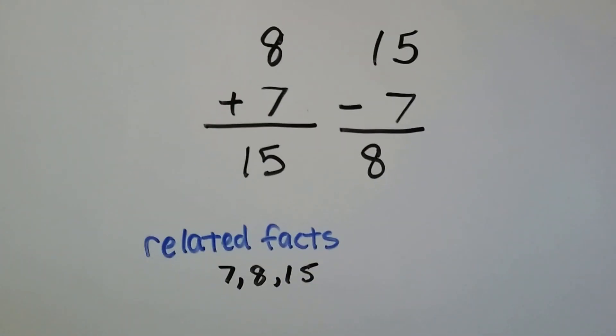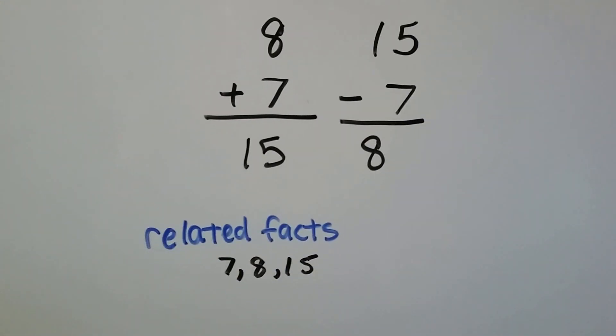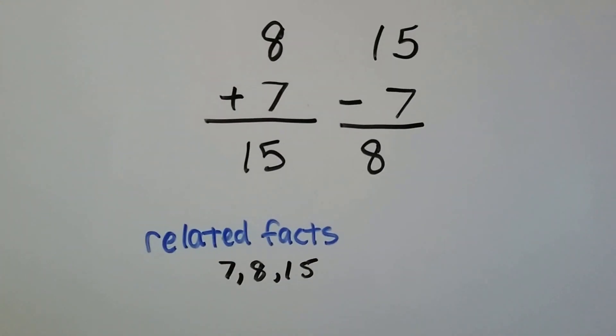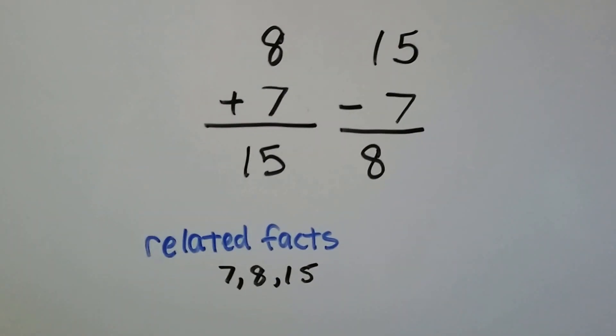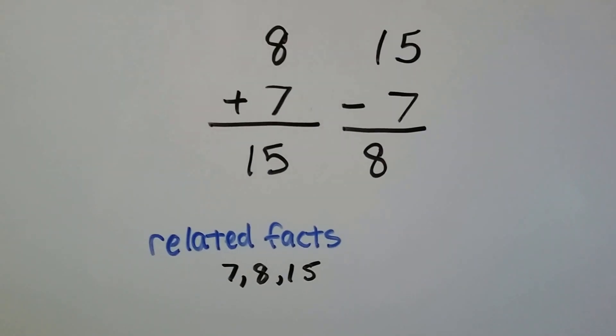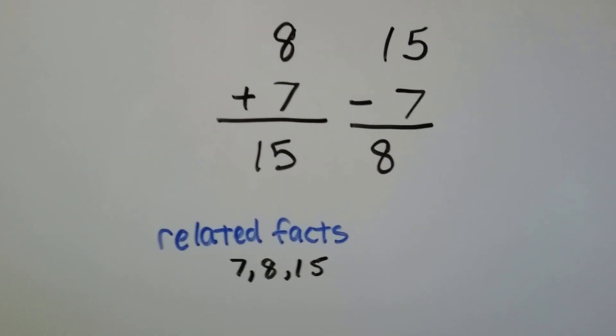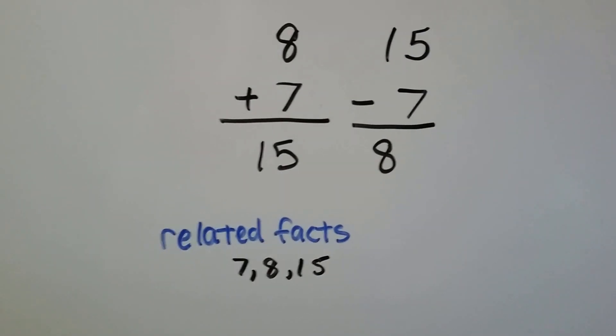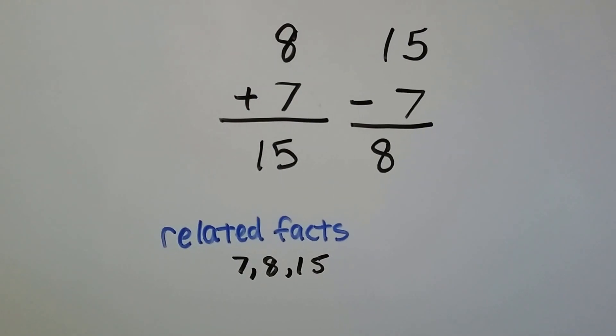8 plus 7 is 15, and 15 minus 7 is 8. The related facts are 7, 8, and 15.